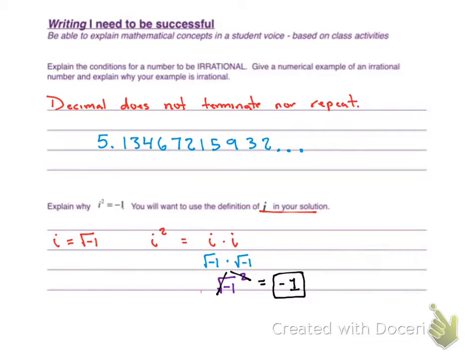And we did use the definition of i in our solution, because we know i equals square root of negative one. Again, i squared is equal to i times i. And then this is where we substituted the square root of negative one, because we know i equals the square root of negative one. And then negative one squared. And final answer is, simplified out, i squared equals negative one.